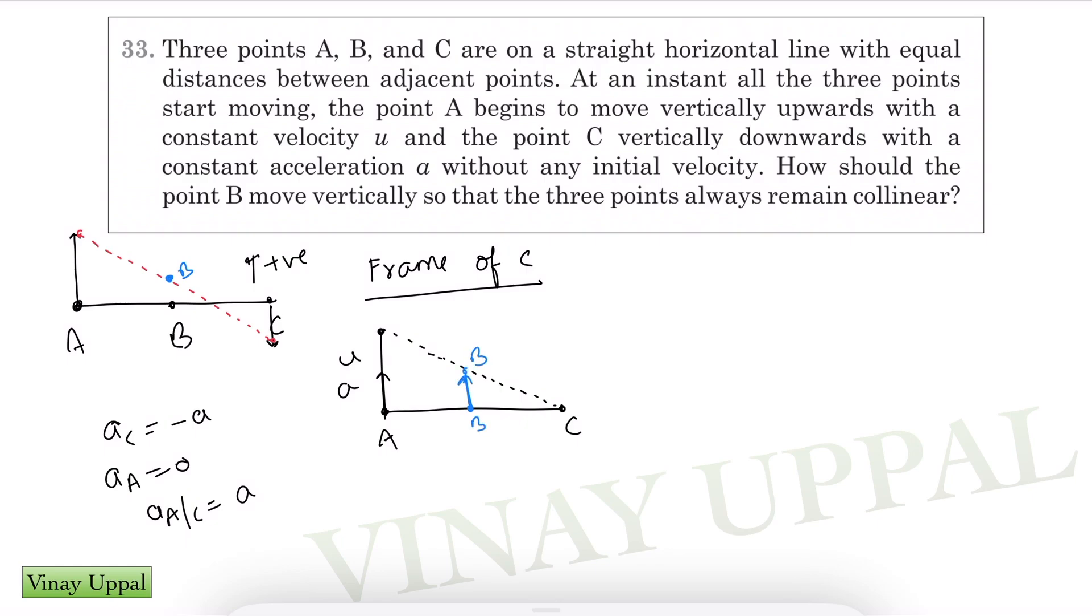Now it's very easy to see that because AB is equal to BC, this blue length which is the displacement of B with respect to C should be half of this red length which is displacement of A with respect to C.